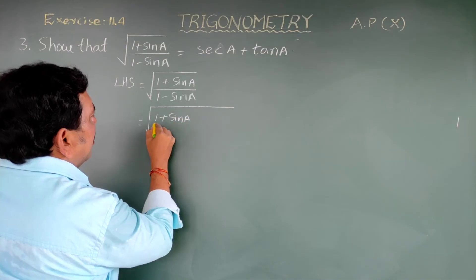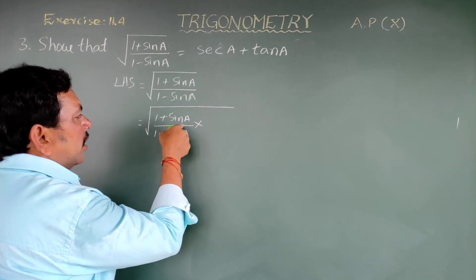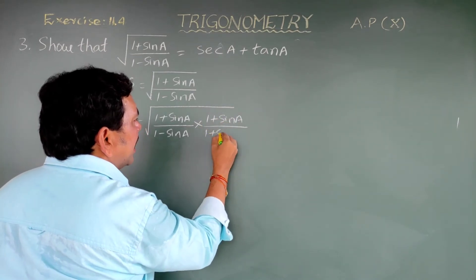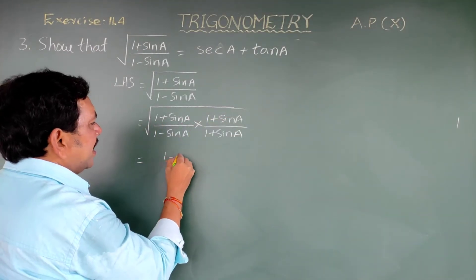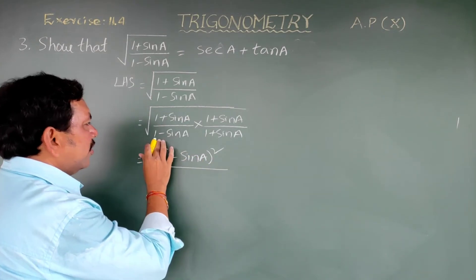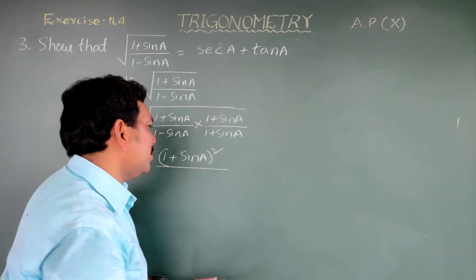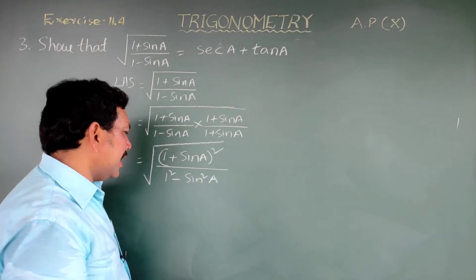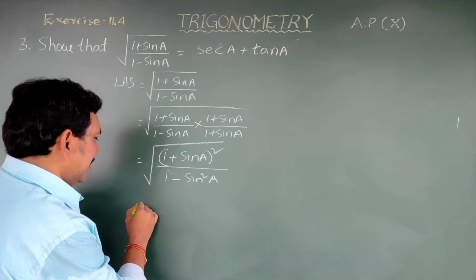Multiplying numerator and denominator by (1 + sin A): numerator becomes (1 + sin A)(1 + sin A) = (1 + sin A)², and denominator becomes (1 - sin A)(1 + sin A), which by the (a-b)(a+b) formula equals 1 - sin²A.